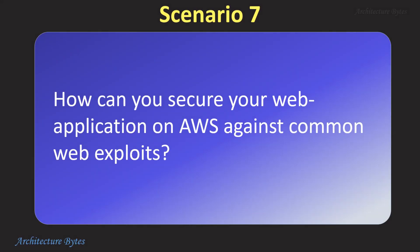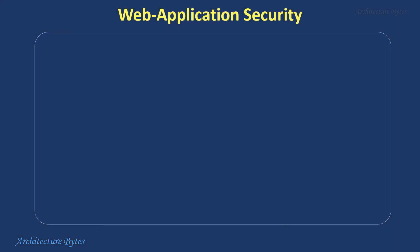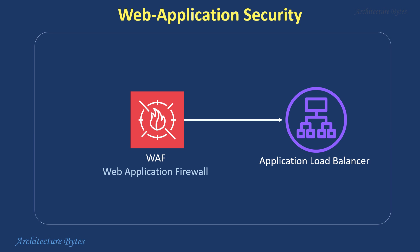How can you secure your web application on AWS against common web exploits? Using AWS WAF, or Web Application Firewall, you can create a security layer for your web applications, protecting them from malicious attacks like SQL injection and cross-site scripting. WAF lets you define rules to block suspicious traffic, allow legitimate requests, and monitor web traffic for security threats.